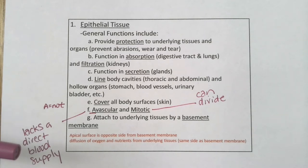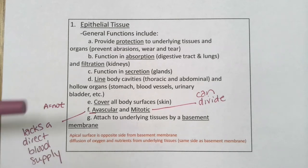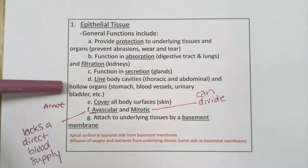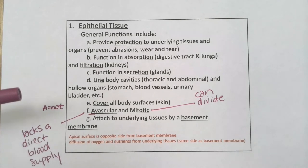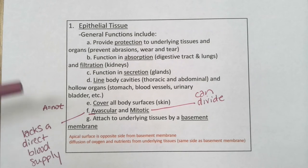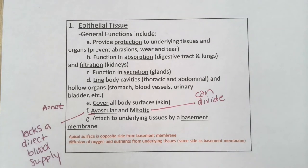Epithelial tissue is responsible for lining all of our body cavities, like the thoracic cavity and the abdominal cavity, and lining hollow organs. For example, the stomach, our blood vessels, and our urinary bladder are all lined by epithelial tissue. It also covers the surface of our bodies in the form of our skin, or integument, or cutaneous membrane — those terms all essentially mean the same thing as skin.